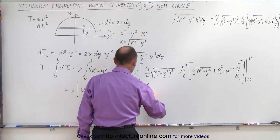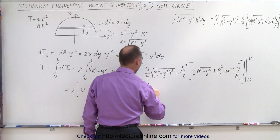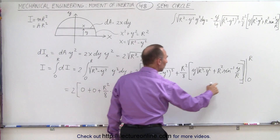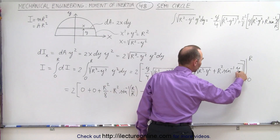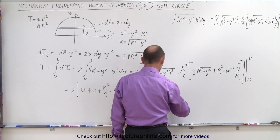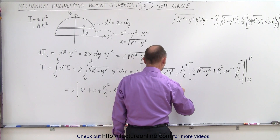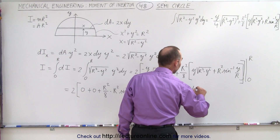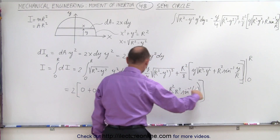Then we subtract everything when we plug in y = 0. When we plug in 0 for y, we get 0 for the first term; we get 0 for the second term; and the arcsine of 0 gives 0 as well. So r² over 8 times r² times the inverse sine of 0 over r is 0, and all these lower-limit terms go to zero.